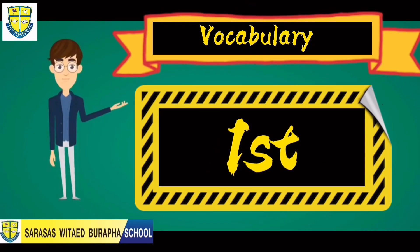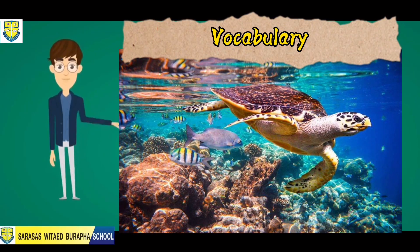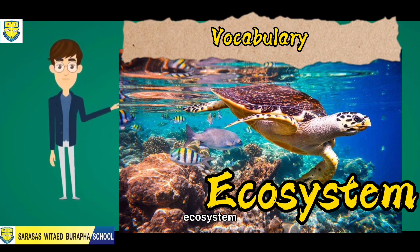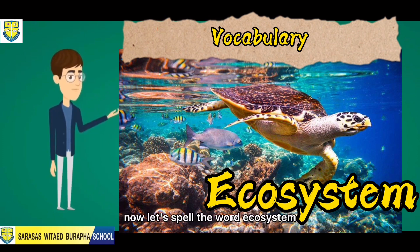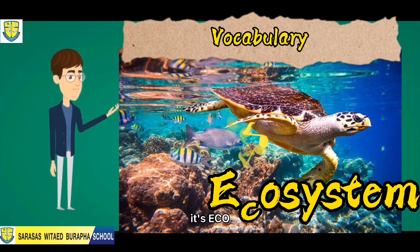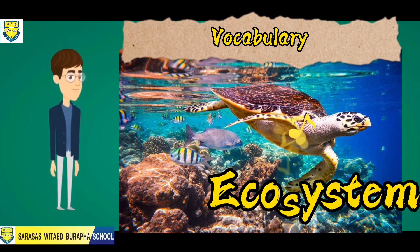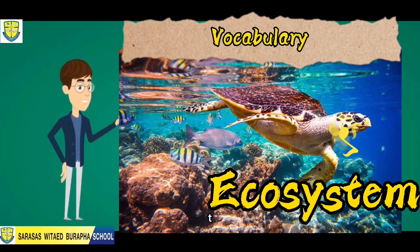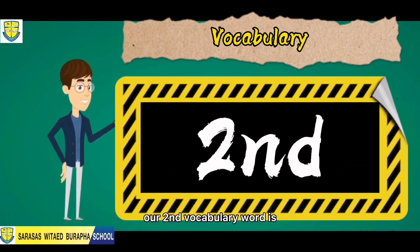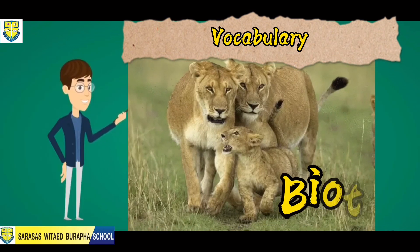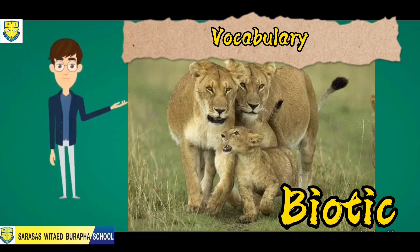Our first vocabulary is 'ecosystem.' Let's spell the word ecosystem: e-c-o-s-y-s-t-e-m. Our second vocabulary word is 'biotic.'